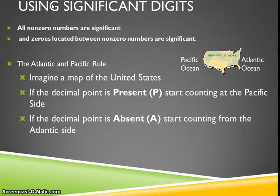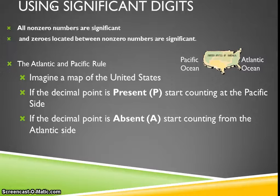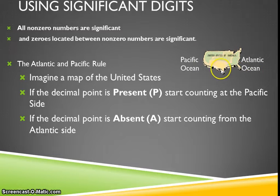In physics we use significant digits often because we do a lot of math with measurements. For example, velocity equals displacement divided by time — displacement might be in meters, time in seconds — so each quantity uses a different measuring instrument of potentially different precision. We need to report our answer correctly. Two basic rules: all non-zero numbers in a measurement are significant, and zeros located between non-zero numbers are also significant. There's also the Atlantic and Pacific rule to help remember how many significant digits a number has.